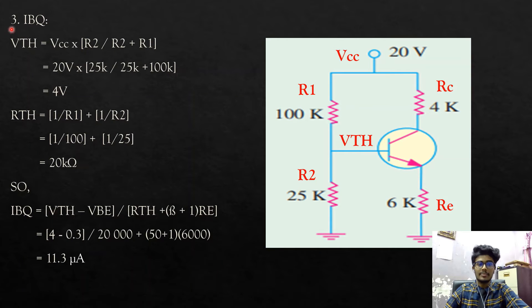The next question is we must find IBq. To find IBq first, we must find the voltage th, which is Vth is the voltage that supplied to the base of the transistor, which is Vth equals to Vcc times in bracket R2 over R2 plus R1.